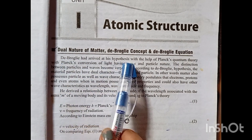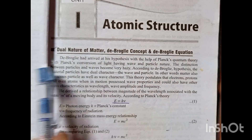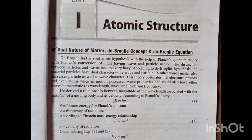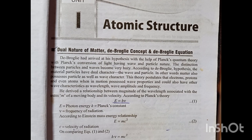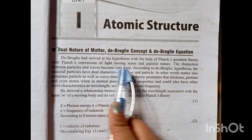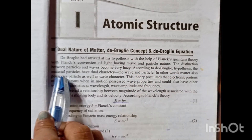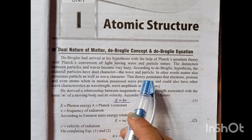De Broglie arrived at his hypothesis with the help of Planck's quantum theory and the concept of light having both wave and particle nature. According to de Broglie's hypothesis, the distinction between particles and waves became very hazy. The material particle has dual nature — wave nature and particle nature.